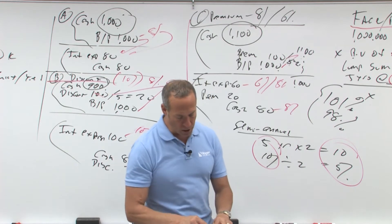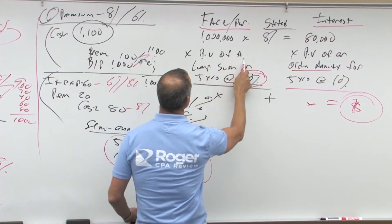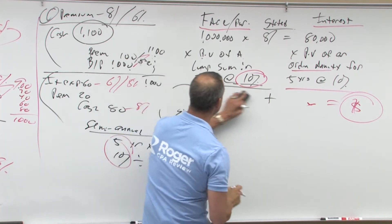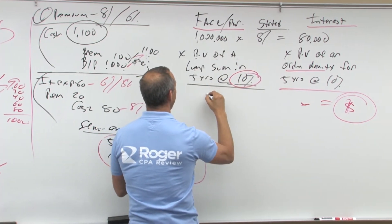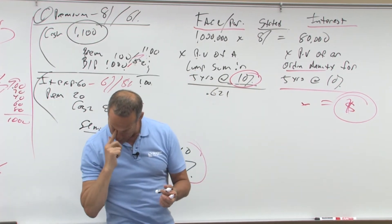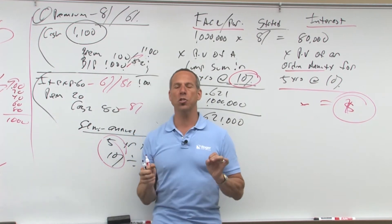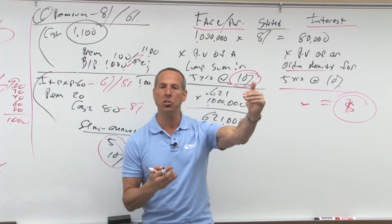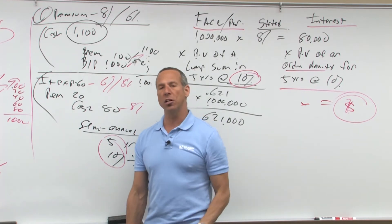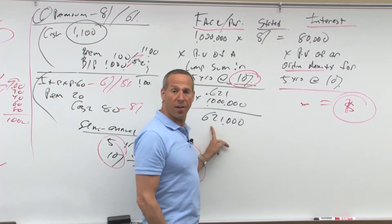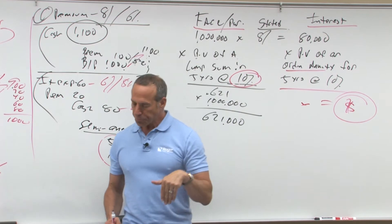Let's look at 10%, five years: the factor is 0.621. So if I come back over here, a million dollars times the present value of a lump sum factor for five years at 10% — which is 0.621 — equals $621,000. So if I put $621,000 in the bank today at 10%, it'll grow in five years to a million dollars. That means if someone says they'll pay me back a million dollars in five years, it's really worth $621,000 today at a 10% desired return.